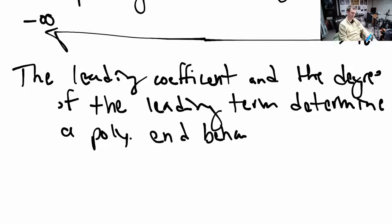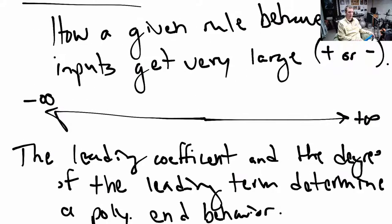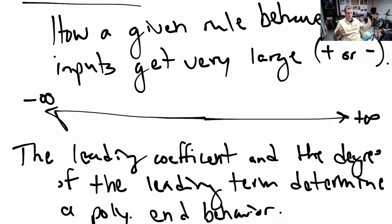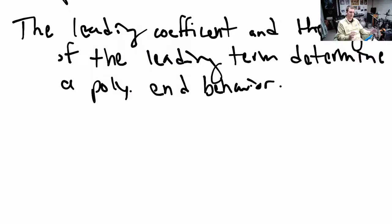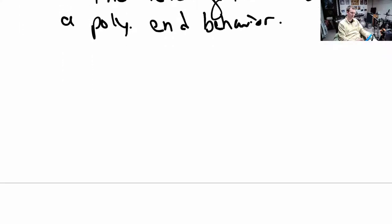For polynomials in particular, it's just the leading coefficient and the leading term's degree that determine the end behavior. There could be strange things happening for small inputs or a certain range, but overall there's a big pattern to polynomials based solely on the leading coefficient and the degree.